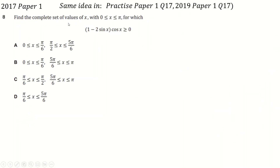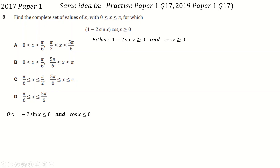Now we'll get into some more complicated ones. I'm choosing this question because it's basically identical to two or three other questions from other papers — they really like asking this sort of question. The way I like to do it is to consider the two factors separately. For this product to be greater than or equal to zero, either both factors are positive or both are negative. This method works well for these questions.